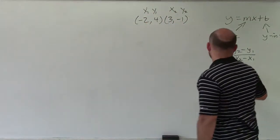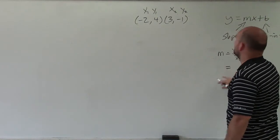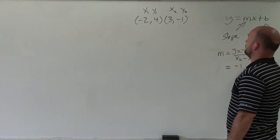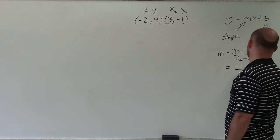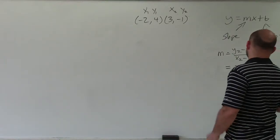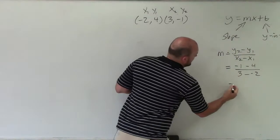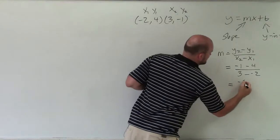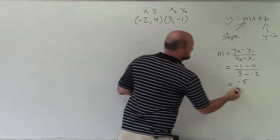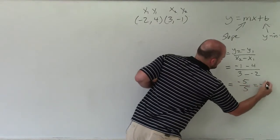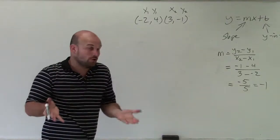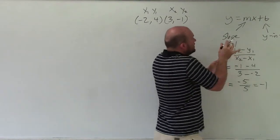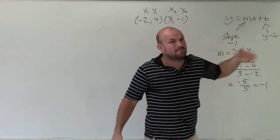Now I plug in and solve, and I have negative 1 minus 4 divided by 3 minus a negative 2. Negative 1 minus 4 is negative 5, divided by 5, which equals negative 1. So therefore, my slope is equal to negative 1.